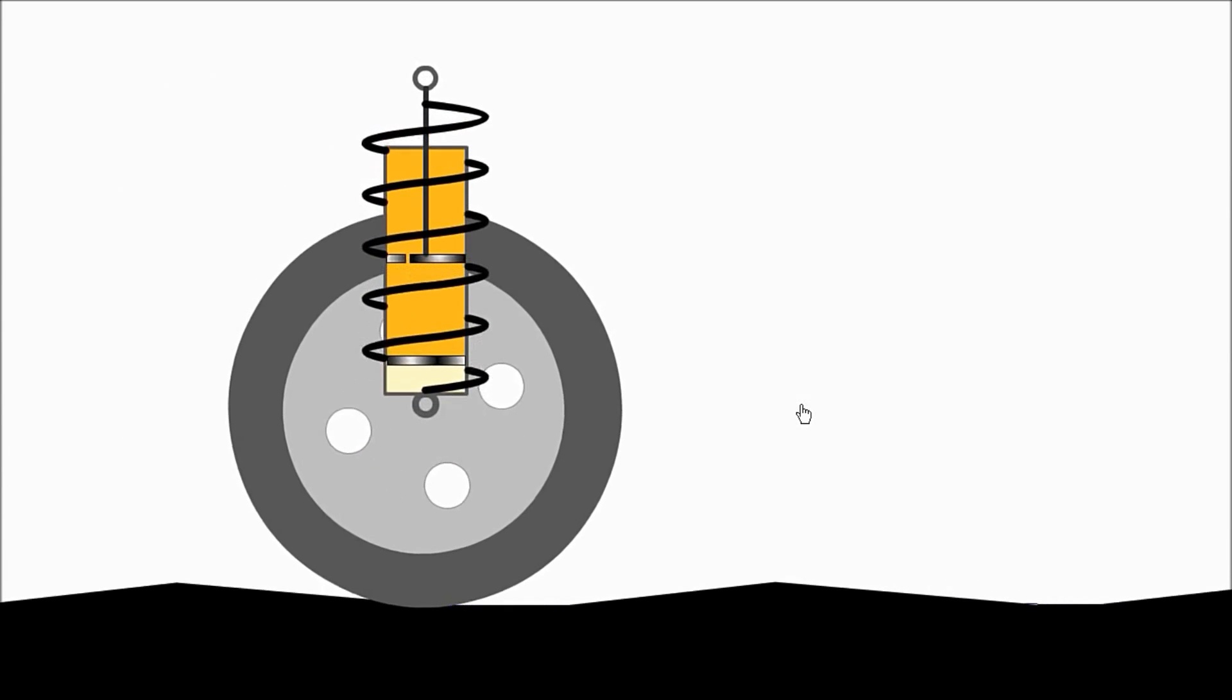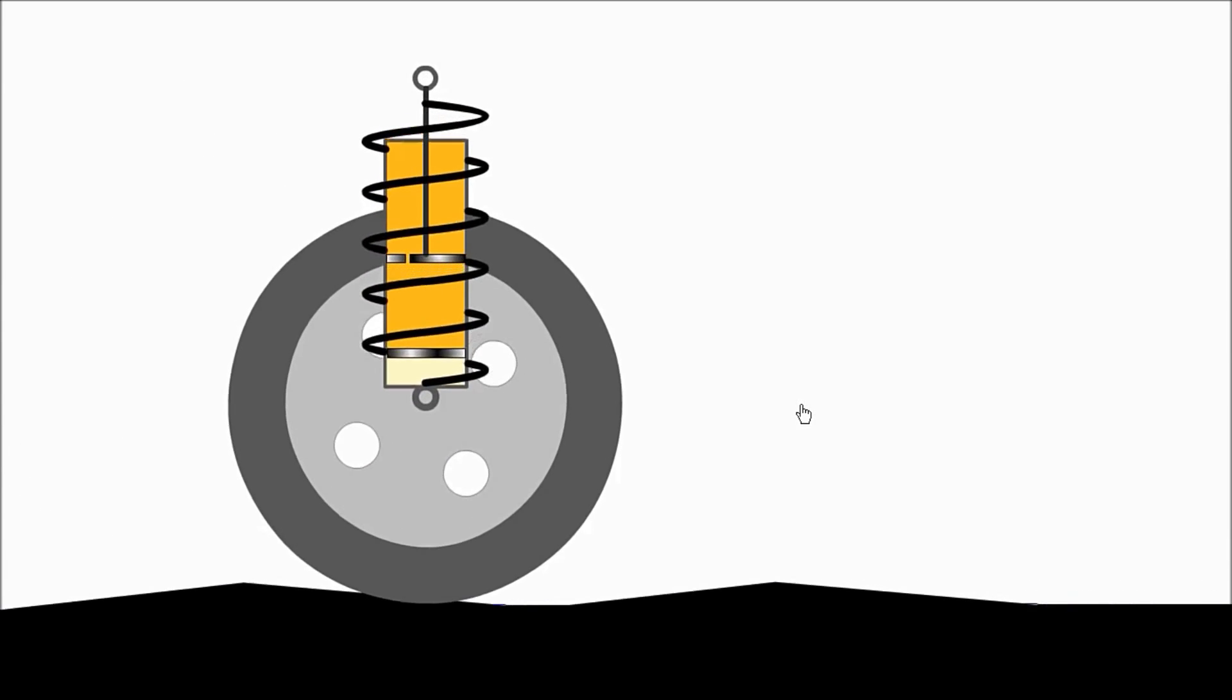The suspension consists of springs, linkages and dampers and connects the car with the road surface through the wheels and tires. It provides comfort for the occupants and helps maintain the wheels in good contact with the road, providing traction, maintaining stability and reducing stopping distance.